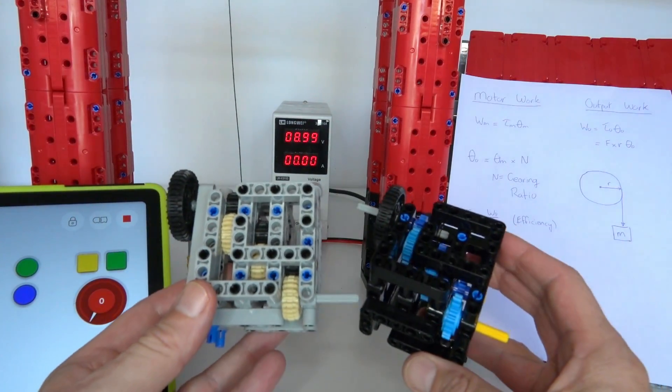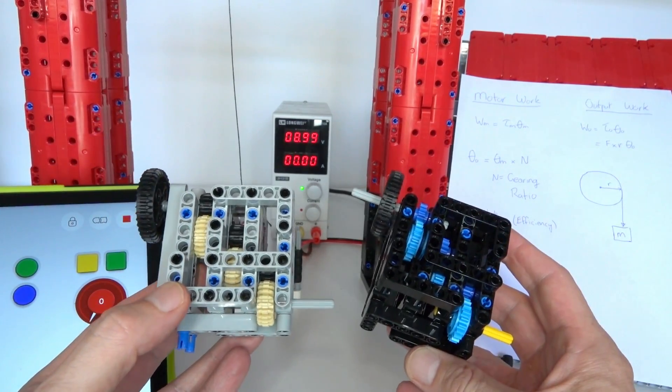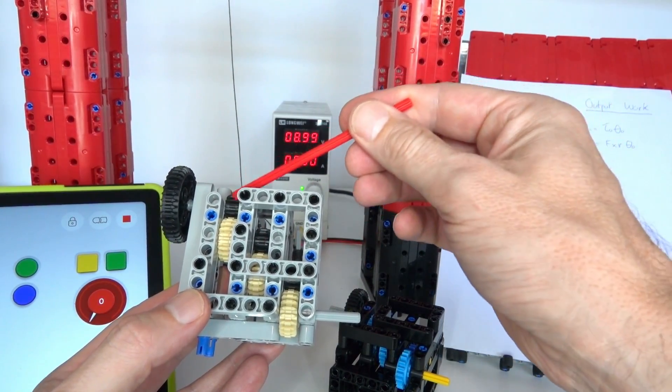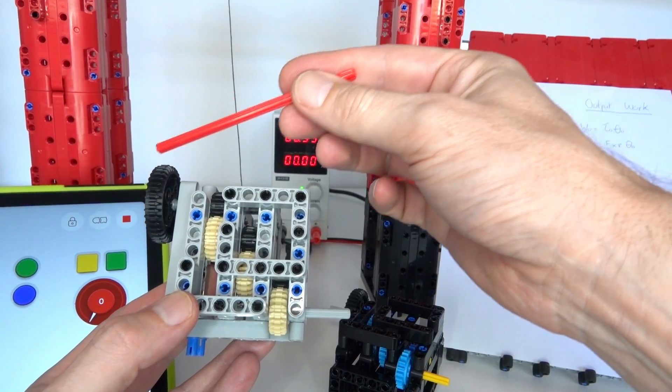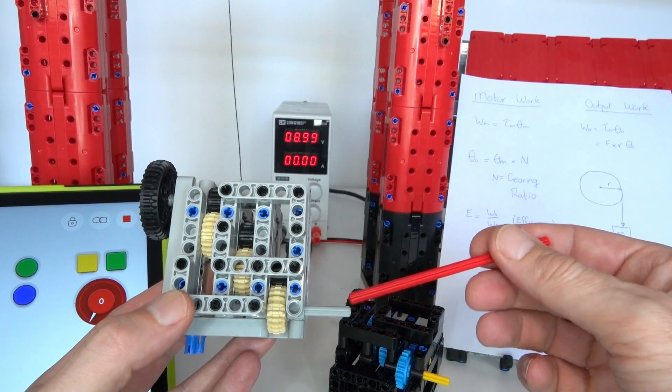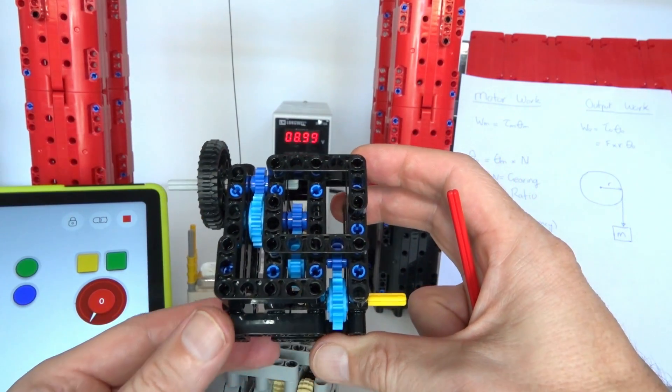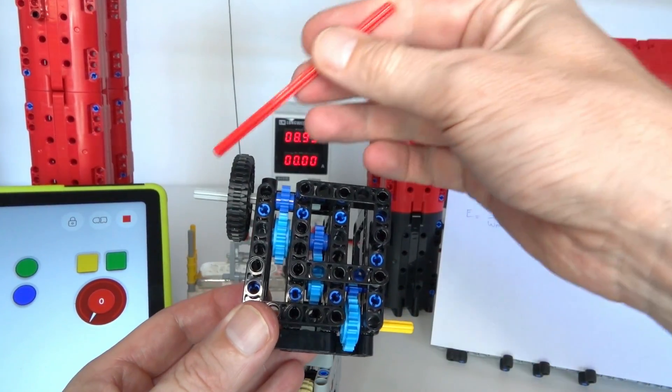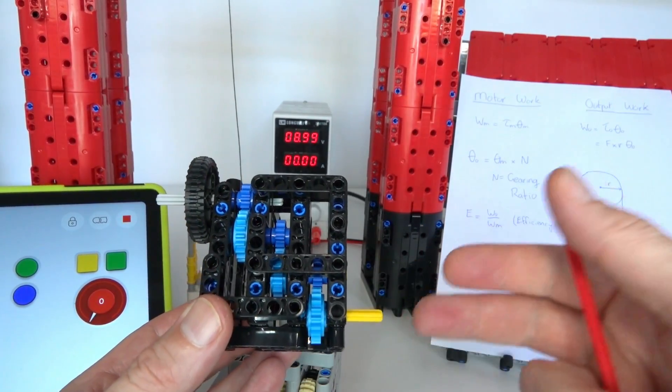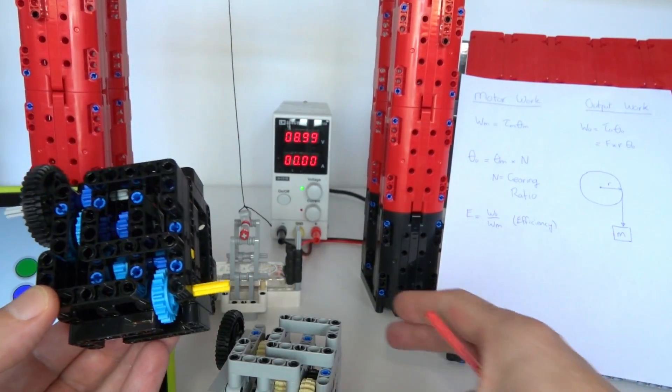Alright so for my experimental setup what I've done is built two gearboxes using the old gears and the new gears. What I've simply done is just got three layers of 12 driving 20, so that is a 3 to 5, 3 to 5, and 3 to 5. So the ratio between the input and the output is 27 to 125 which is pretty similar to one to five. I've got the same version using the new versions of those gears. I'm going to drive each of these gearboxes in a crane that I've got behind me to lift a weight and I'm going to measure the friction losses between the input and output of each of these gearboxes.